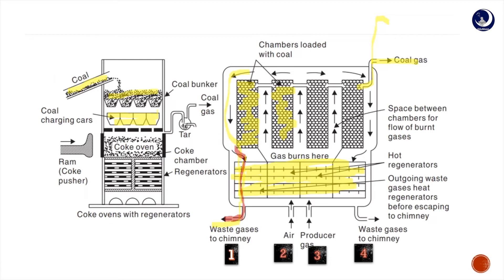Finally, coal is converted into coke, and coal gas is also produced during heating. The formed coke is passed through a ram coke pusher into the coke chambers for collection. Meanwhile, the coal gas is passed through different chambers to recover byproducts. From the time coke is formed to the time it is taken out, the coal gas released passes through different types of chambers to extract byproducts.